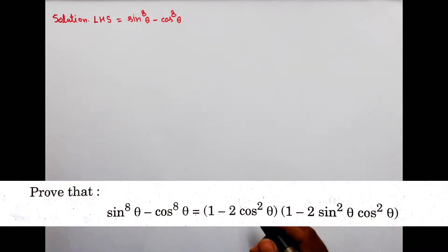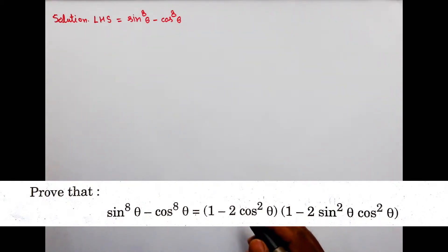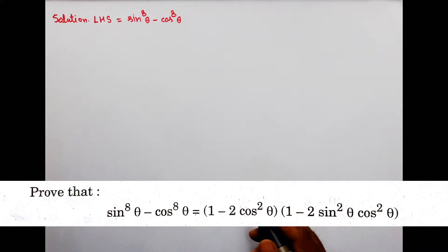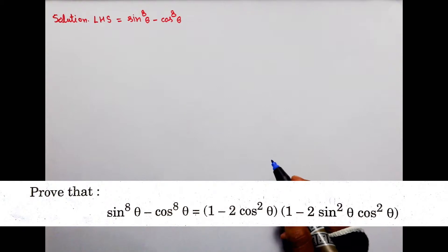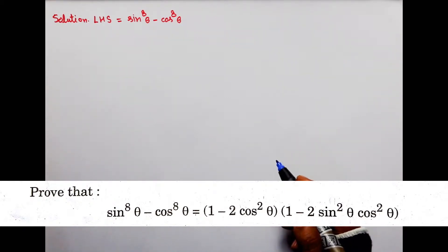Question hai bachyo: prove that sin theta to the power 8 minus cos theta to the power 8 is equal to (1 minus 2 cos square theta)(1 minus 2 sin square theta cos square theta).